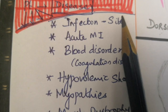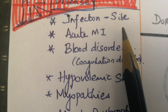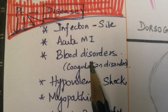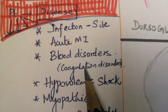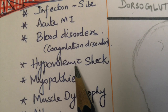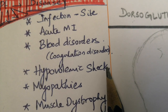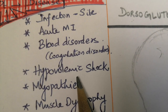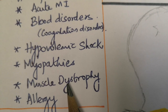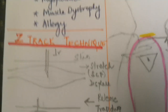Contraindications: do not inject at an infected site. In myocardial infarction, IM injection is contraindicated because muscle enzymes stimulated by IM injection may be confused with troponin released in acute MI. Blood disorders like coagulation disorders and thrombocytopenia are contraindicated. In hypovolemic shock, vascularity is reduced so action will be delayed. Myopathies and muscular dystrophies may lead to neurovascular complications. Known drug allergies are also a contraindication.